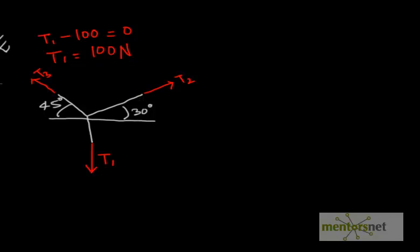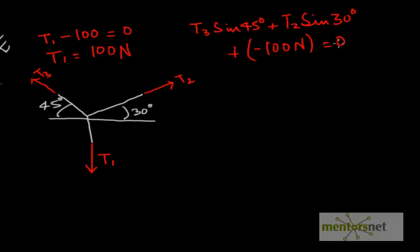So carrying out the vertical force balance first. The vertical component of T3 is T3 sin 45 degrees plus the vertical component of T2 is T2 sin 30 degrees plus the vertical component of T1 is minus T1, which is equal to minus 100 newtons is equal to zero. Which gives T3 sin 45 degrees plus T2 sin 30 degrees is equal to 100.